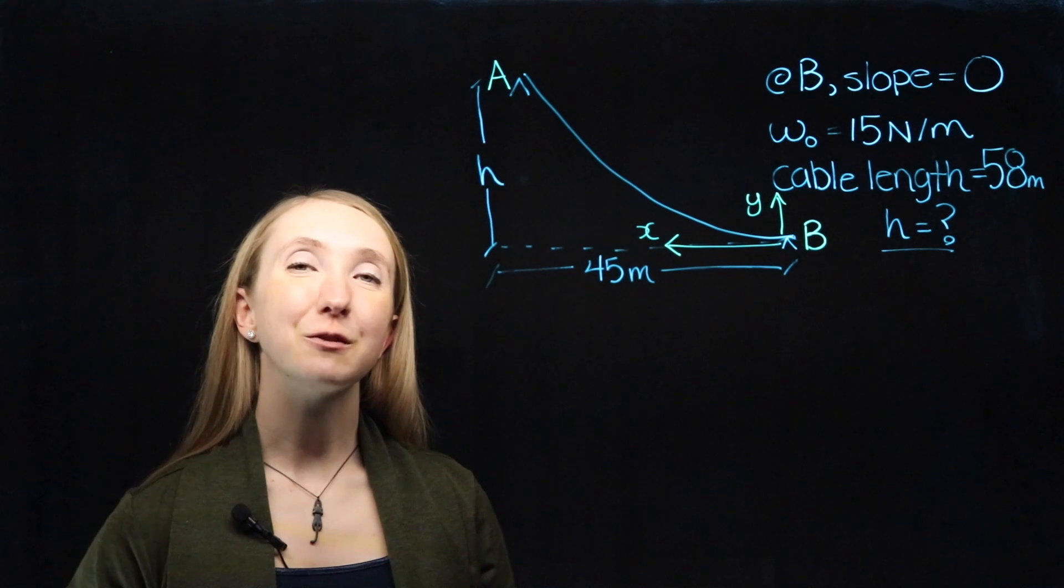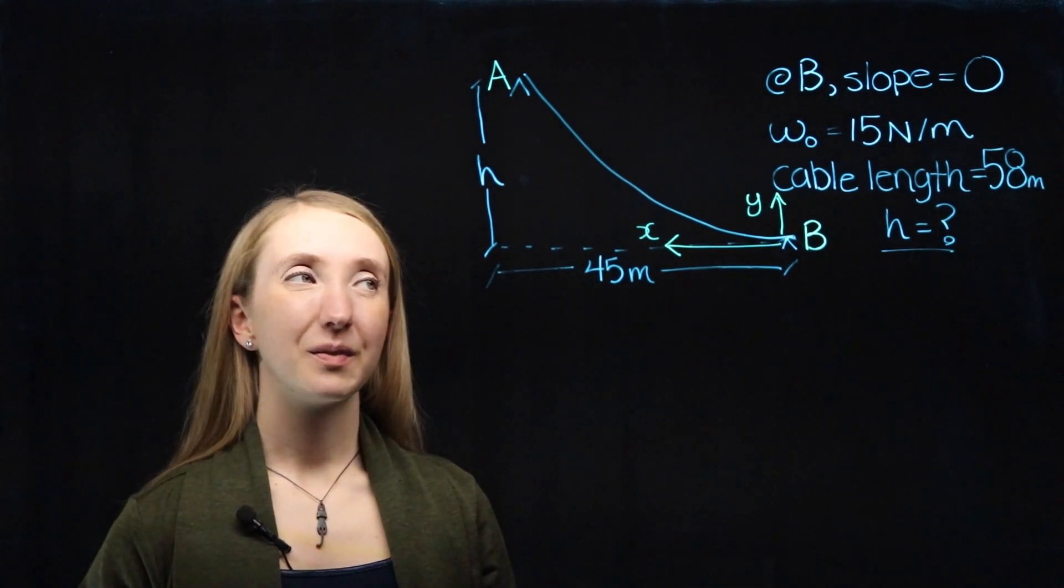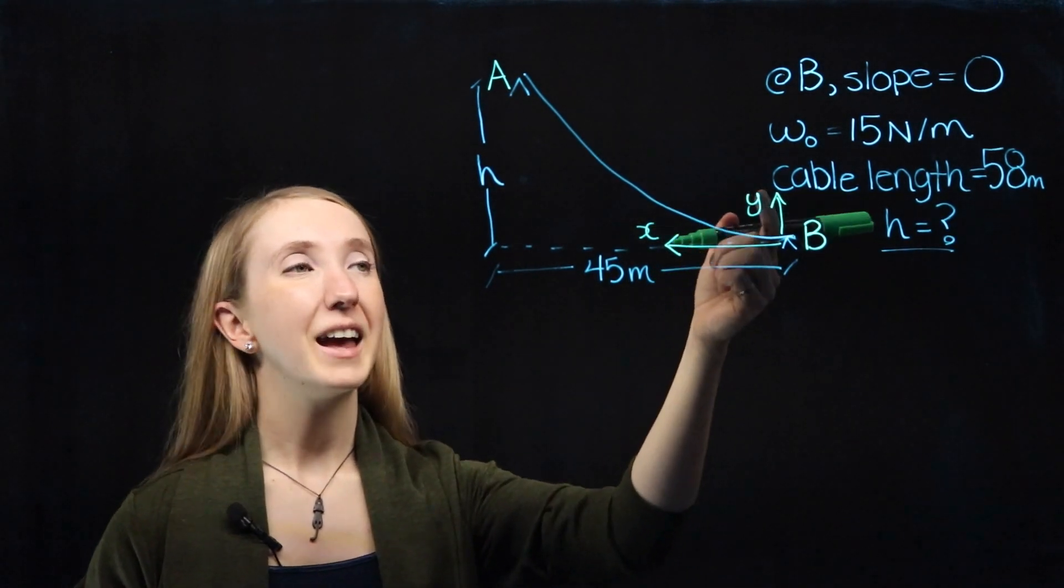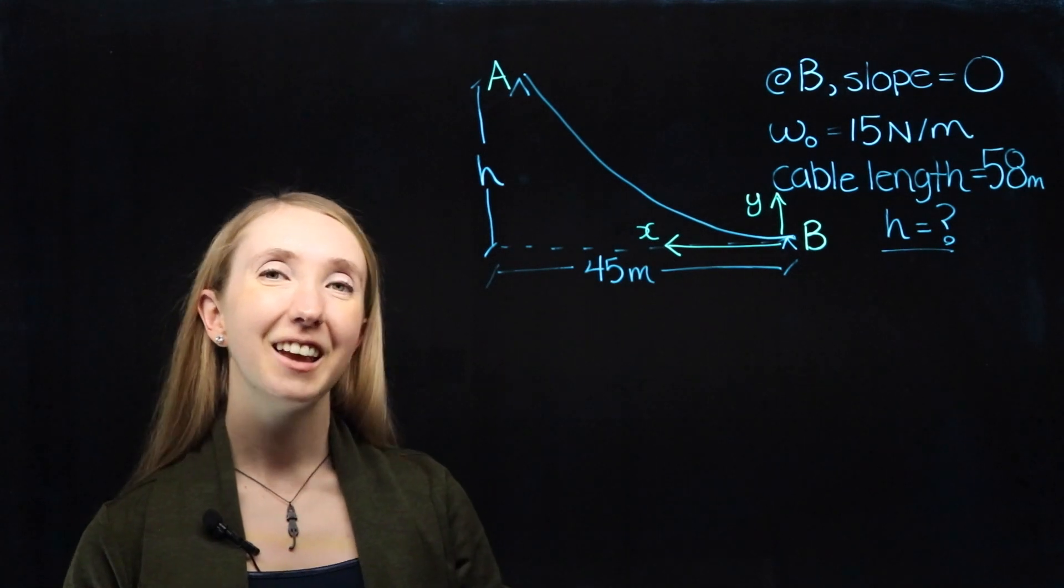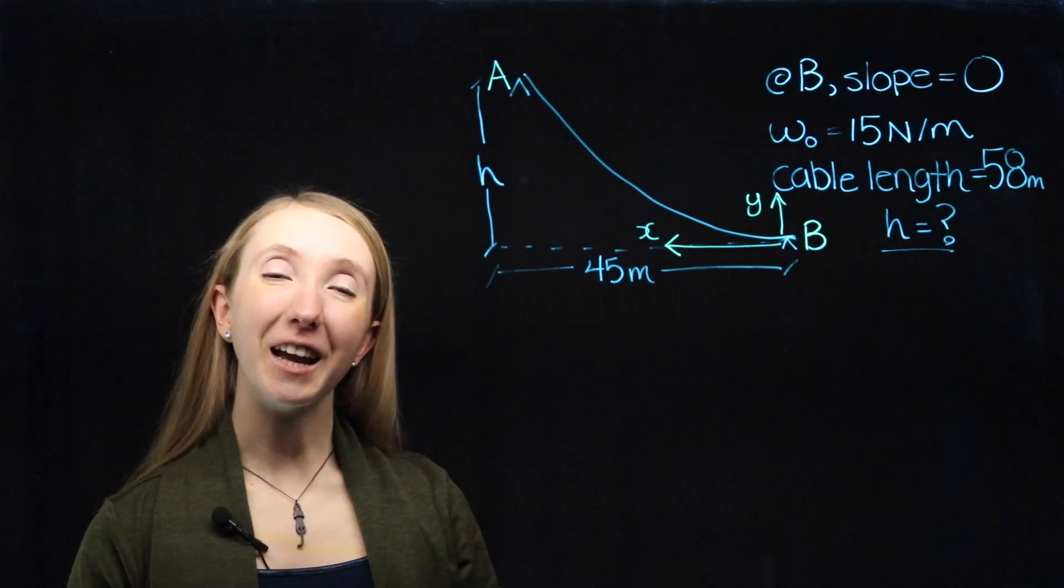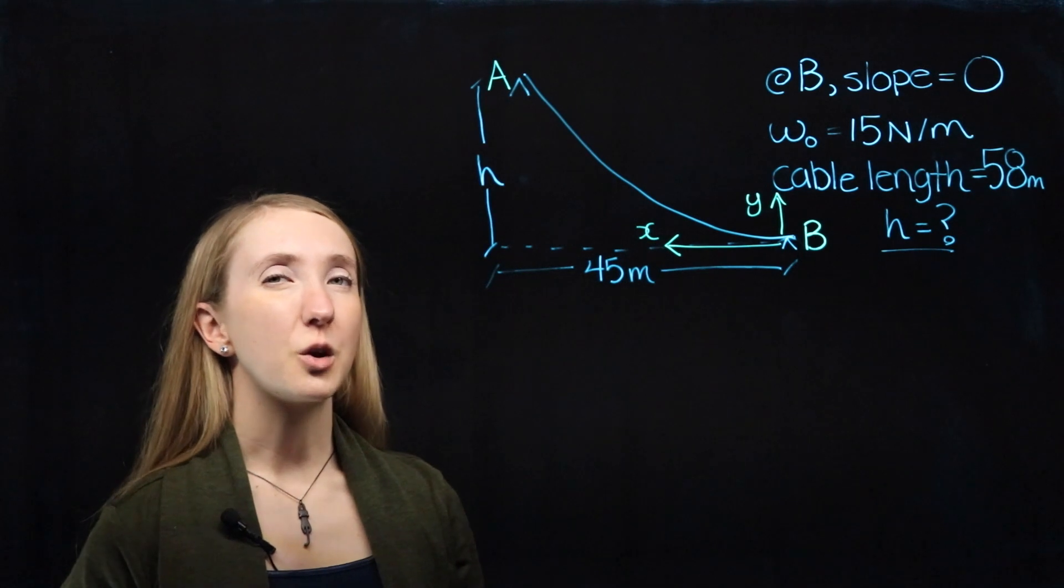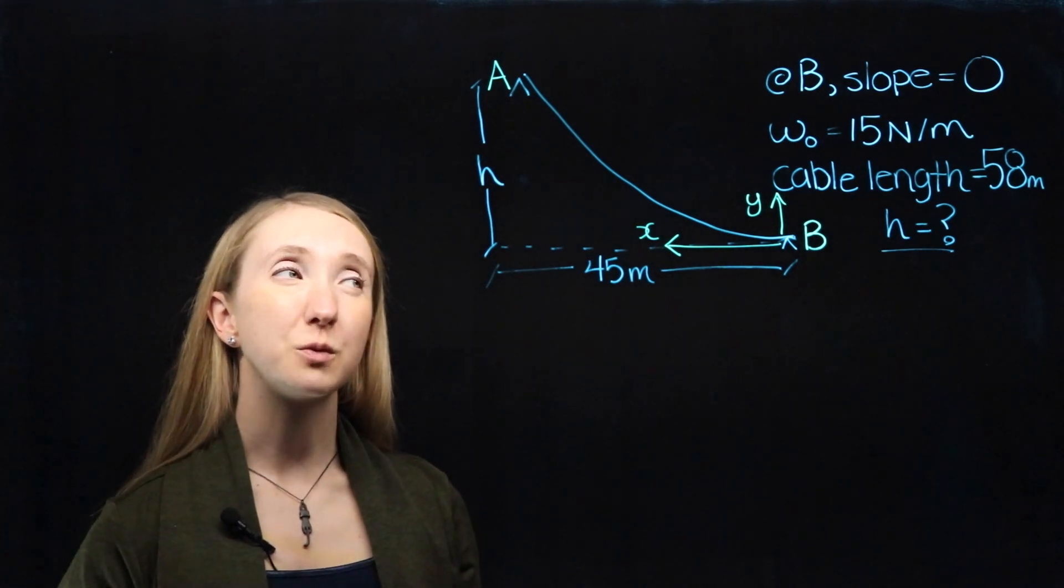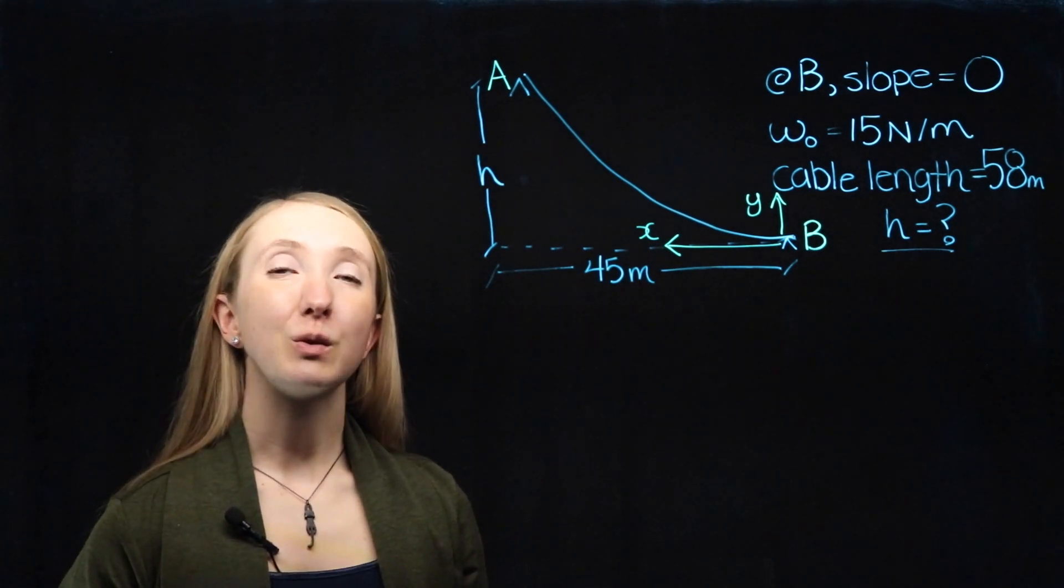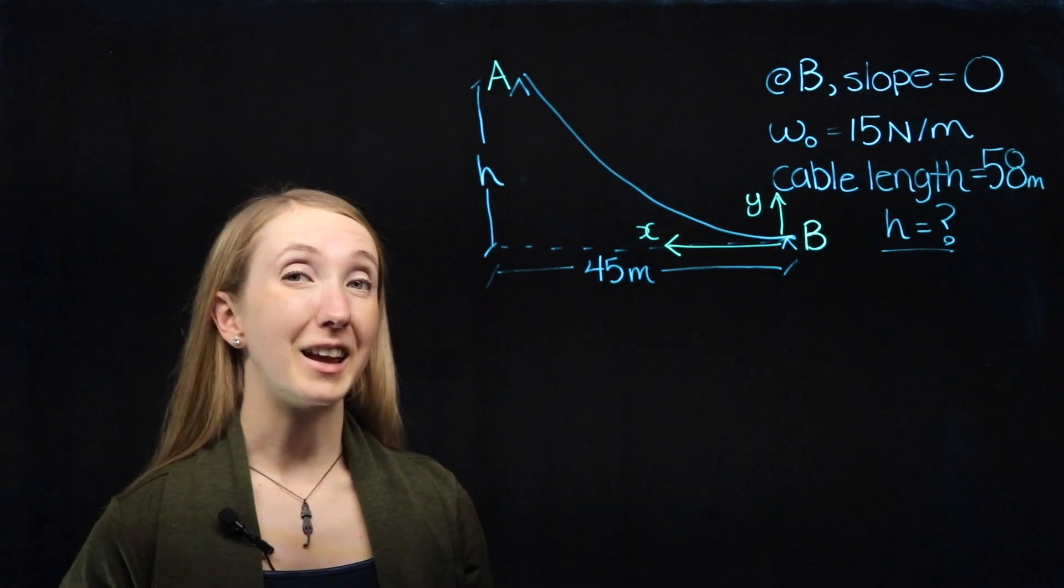The first thing we do is define our coordinate system. We put Y up and X to the left. Next, we're ready to look for H. None of the relationships we know have an H in them directly, but we can use our deflection curve to put an H in.